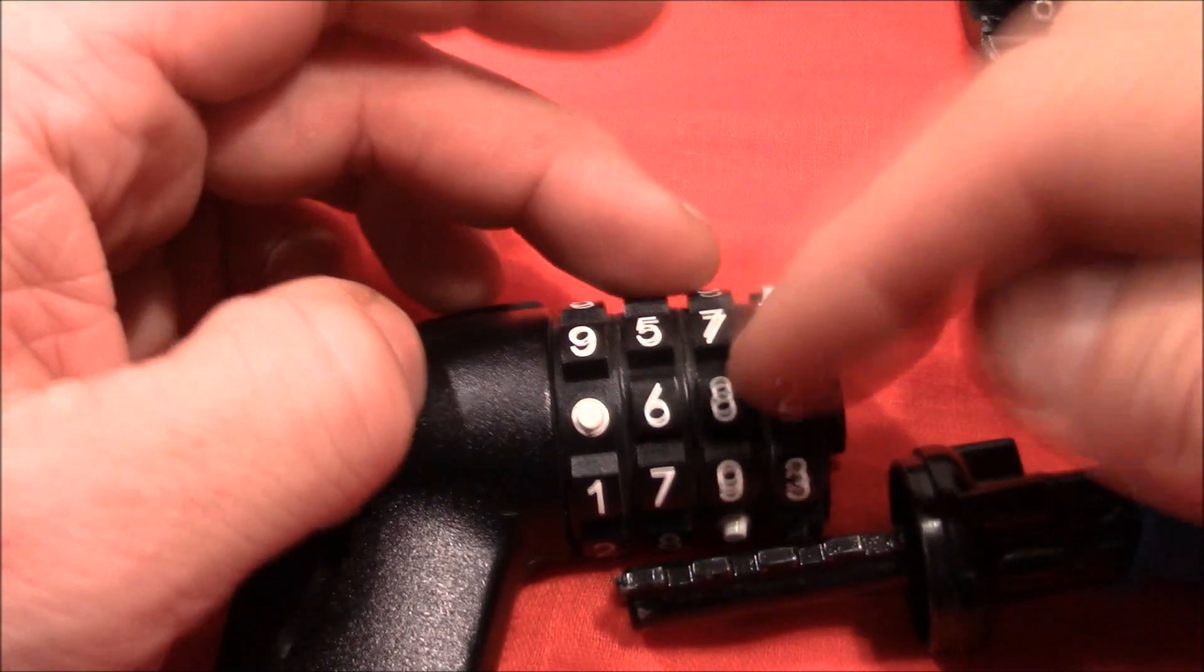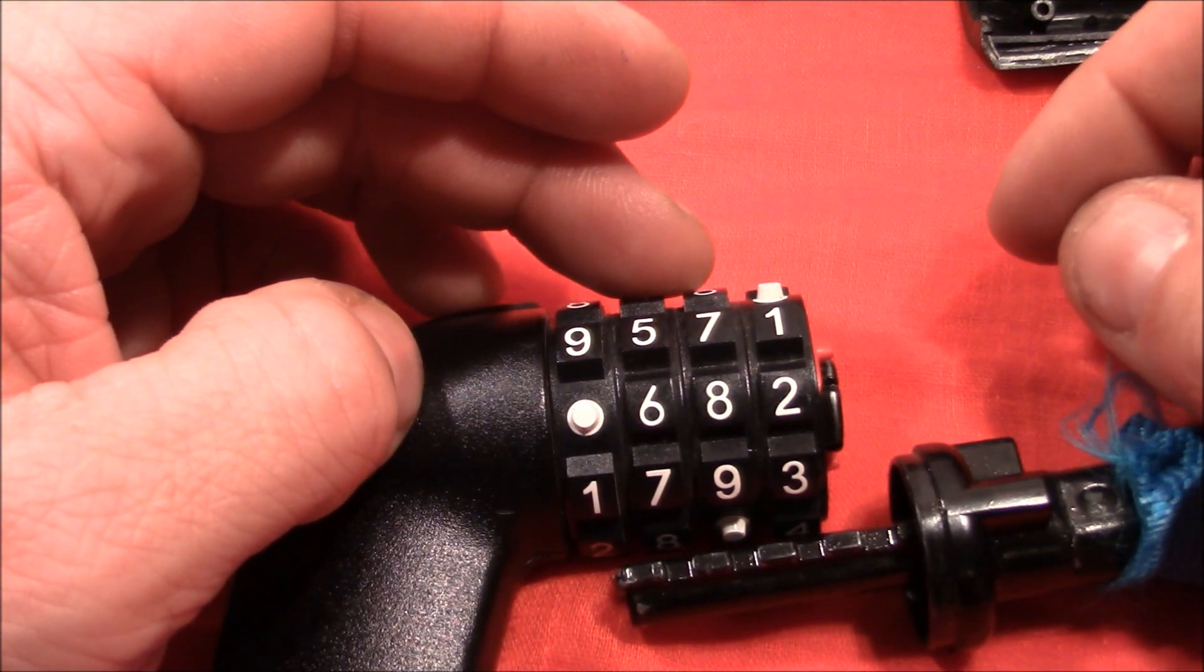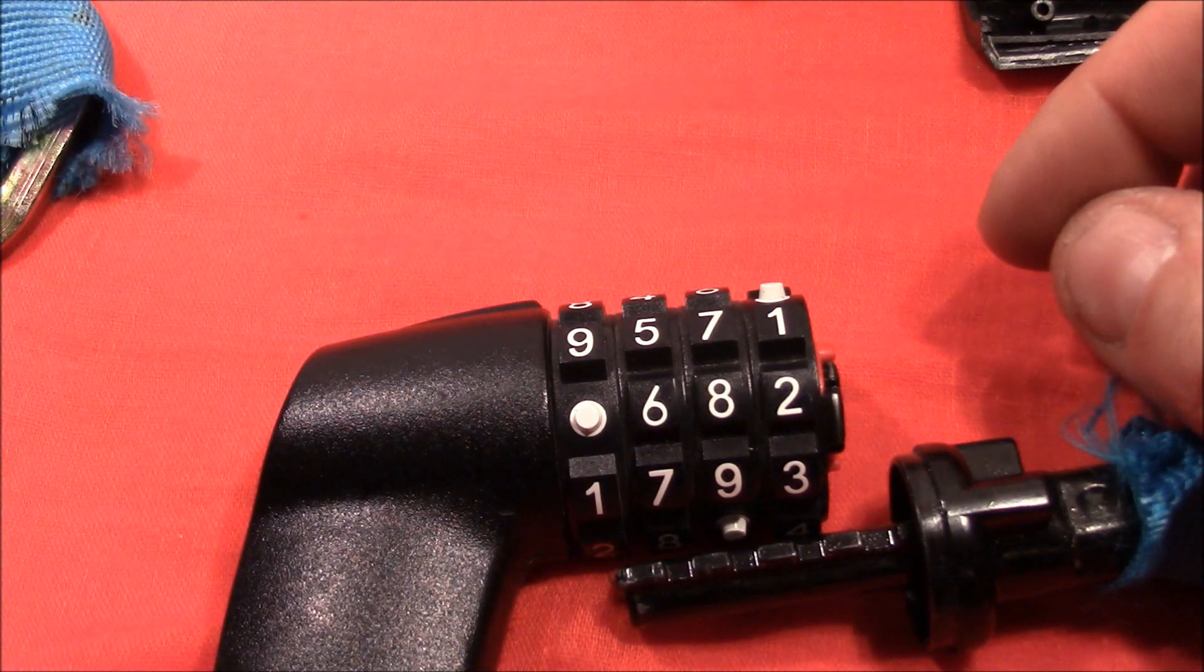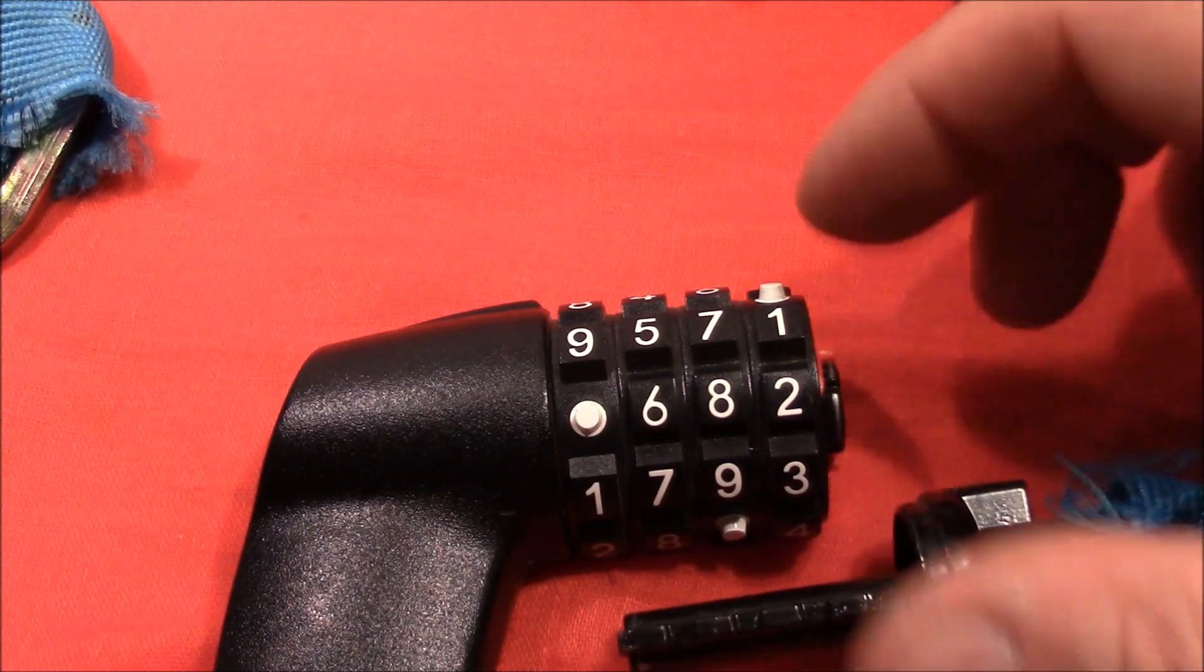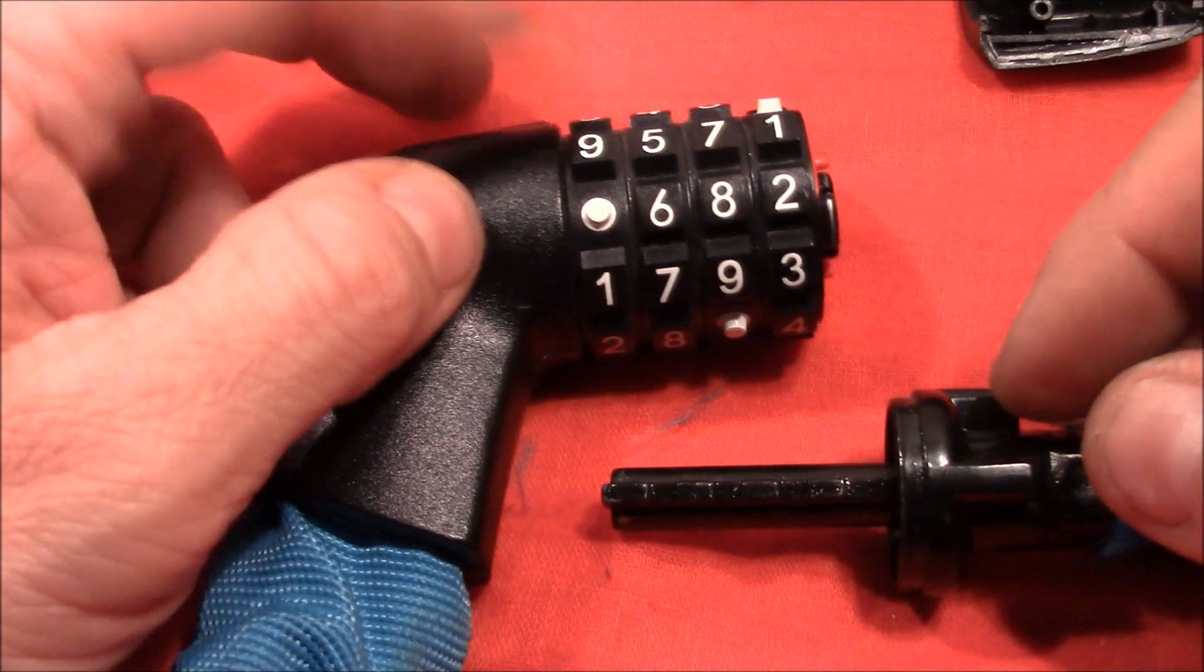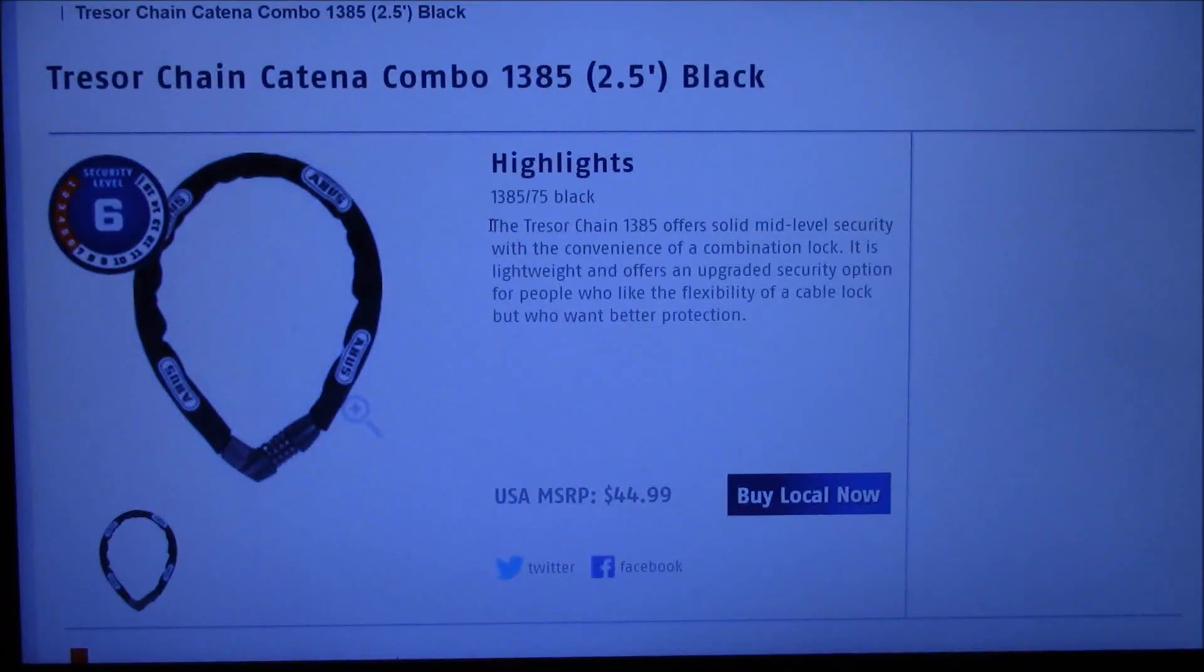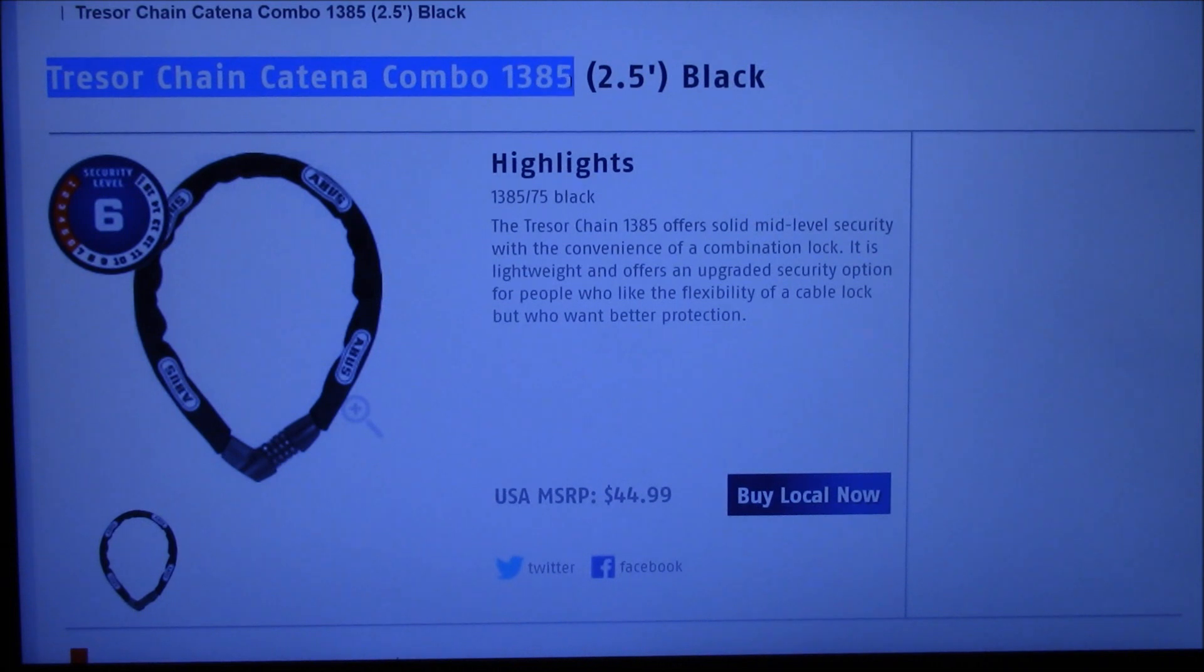Before I want to show you what Abus, how Abus advertises this lock on their website. Here is the Abus website. It's the Tresor chain Catena Combo 1385. It has a security rating 6 out of 15, which is appropriate for this lock, I would say.